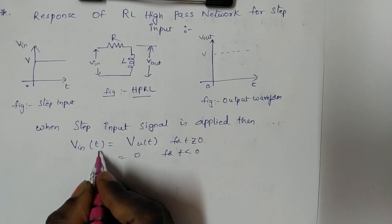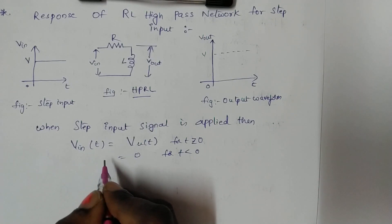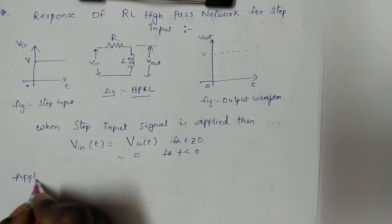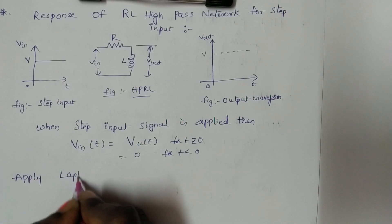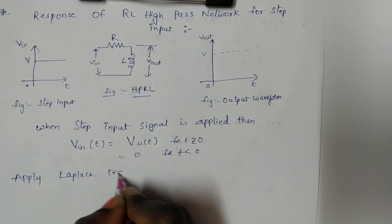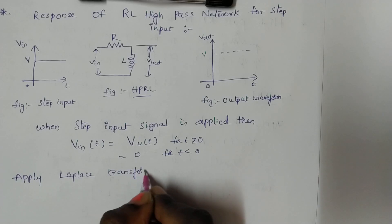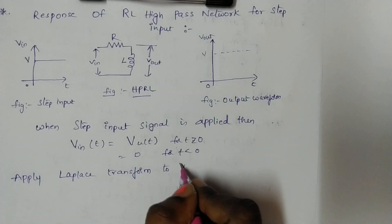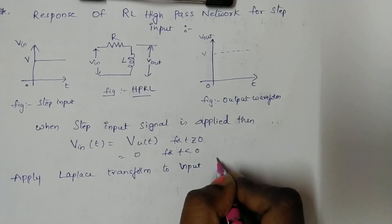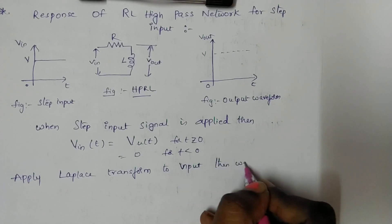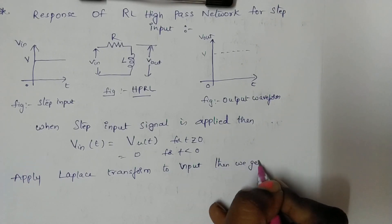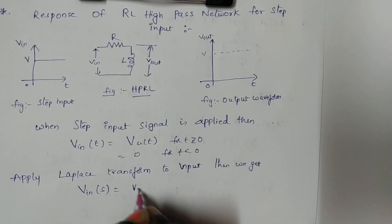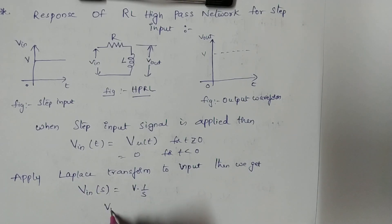We know the input function in the time domain; now we have to convert it into the s-domain. So, applying the Laplace transform to the input, we will get V_input(s) = V · (1/s).